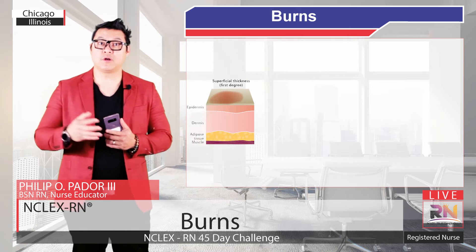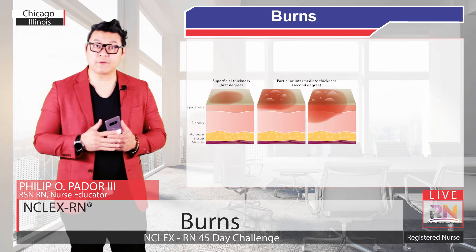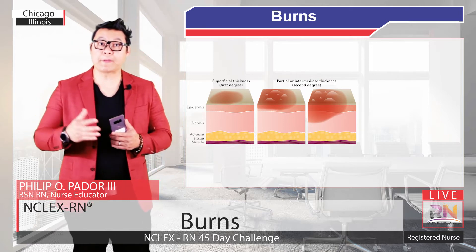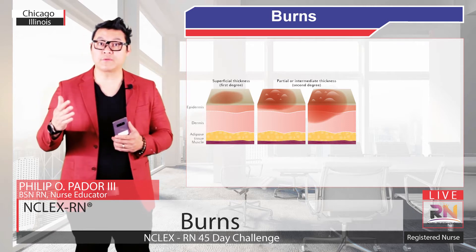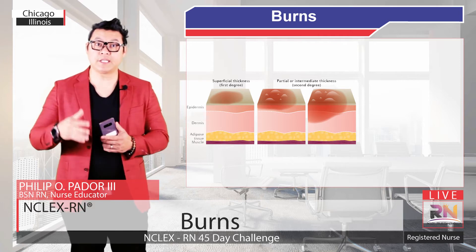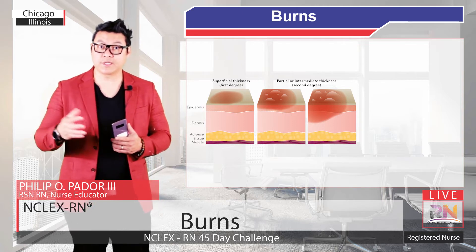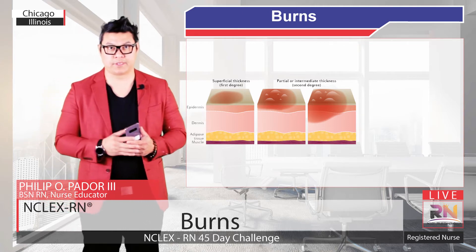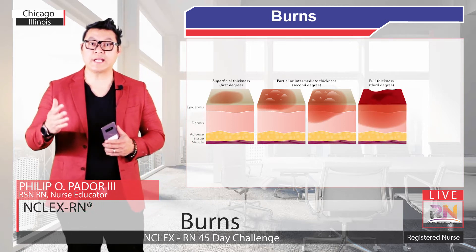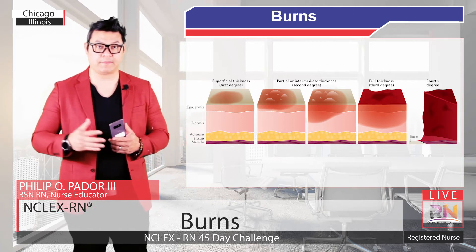In first degree burns, also called superficial burns, the burn only affects the epidermis. In second degree burns, the burn affects the epidermis and the dermis. If only the papillary layer is burned, it's considered a second degree superficial partial thickness burn. But if the burn reaches the deeper reticular layer but doesn't extend through the entire layer, that is considered a second degree deep partial thickness burn. In third degree burns, also called full thickness burns, the entire epidermis and dermis are affected. Finally, fourth degree burns extend to the hypodermis.